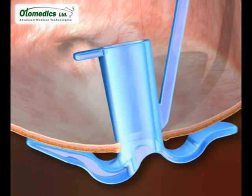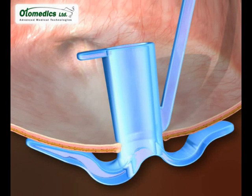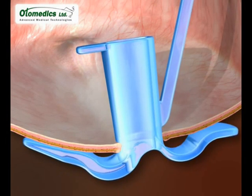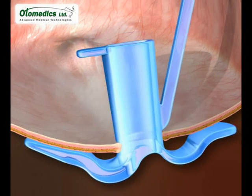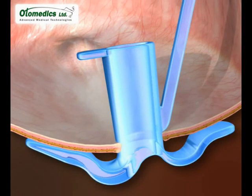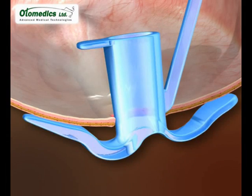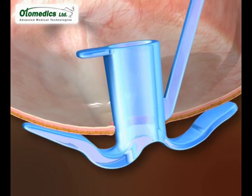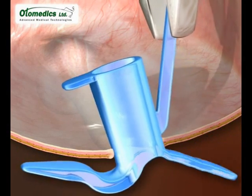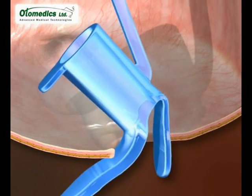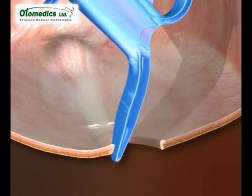This tube exempts the surgeon from making compromises. It is suitable for every tympanostomy tube insertion case, every age, and every middle ear condition — for long as well as very short term retention. When in position in the eardrum, the tube should be cleaned every few months. When the tube has to be removed, the extraction handle is pulled gently, activating the collapse mechanism, and the tube comes out easily.